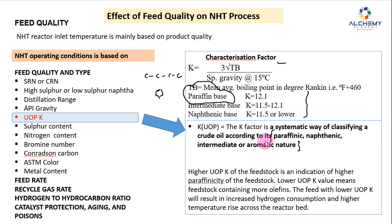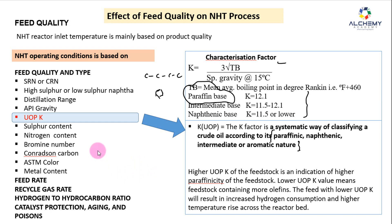If your K value is going to the lower side, it means your feed is becoming heavier and contains more naphthenic or olefinic content. In that condition, hydrogen consumption would be more during the hydrotreating process. The temperature rise will also be more, leading to greater coke formation and deactivation of the catalyst.